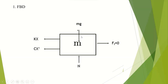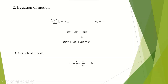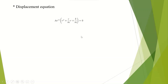C is the damper constant and x dot is the velocity at which the damper is displaced inside the viscous liquid. We know that sigma Fx equals Mx double dot. So minus Kx minus Cx dot equals Mx double dot. Rearranging, we get Mx double dot plus Cx dot plus Kx equals zero. Dividing by M to put it in standard form, we get x double dot plus (C/M)x dot plus (K/M)x equals zero. This is a second order homogeneous differential equation.